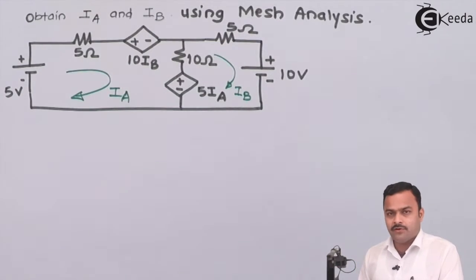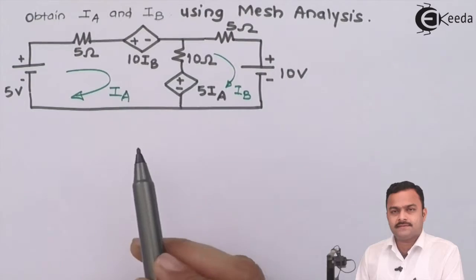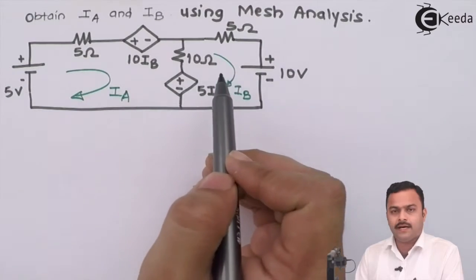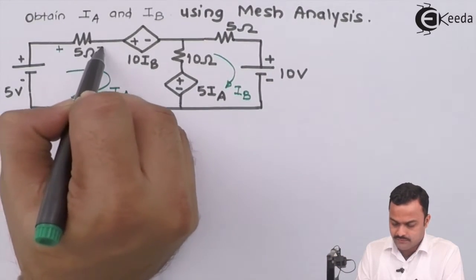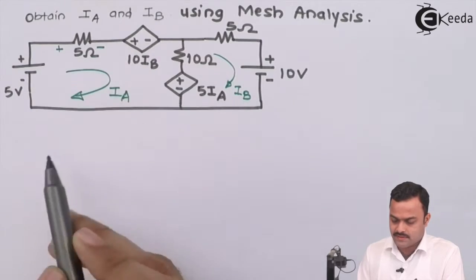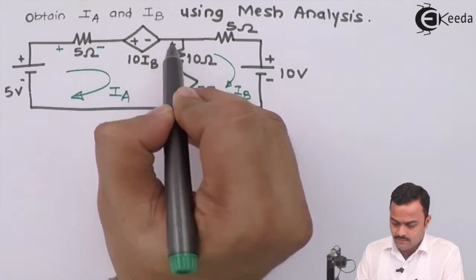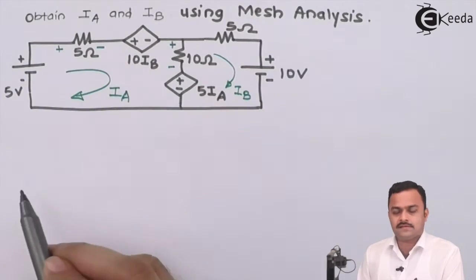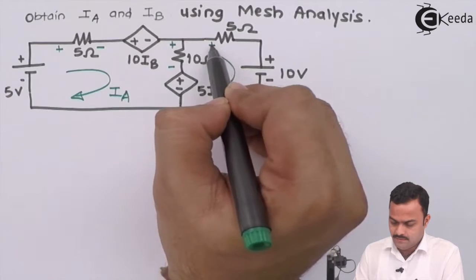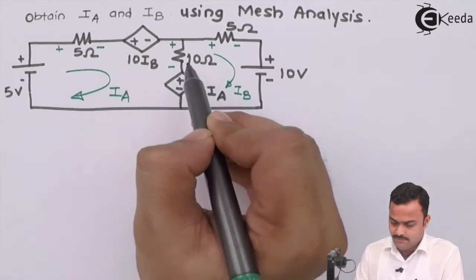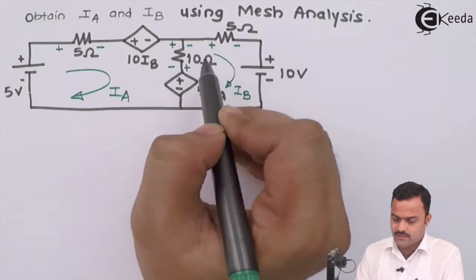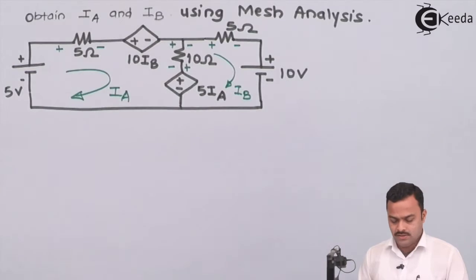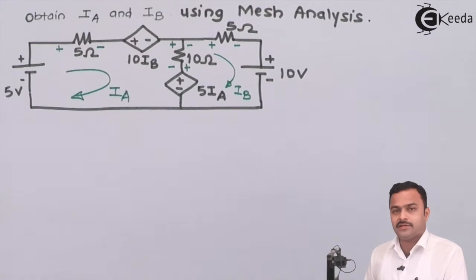It will be straightforward. There are two meshes. Ia and Ib are the mesh currents. Flowing through the 5 ohm resistor, Ia gives the drop plus-minus in this direction. For the 10 ohm, plus-minus like this for Ib. Along Ib, it will have a drop across 5 ohm and 10 ohm. So the circuit is ready for application of KVL.